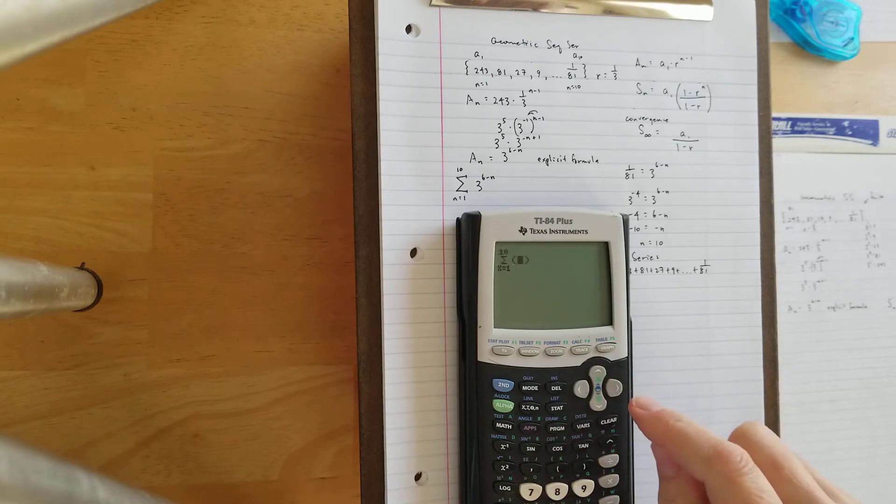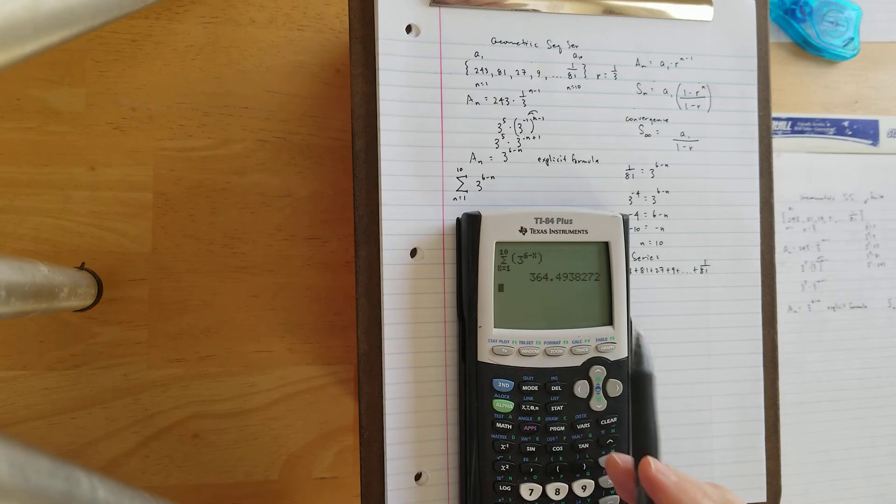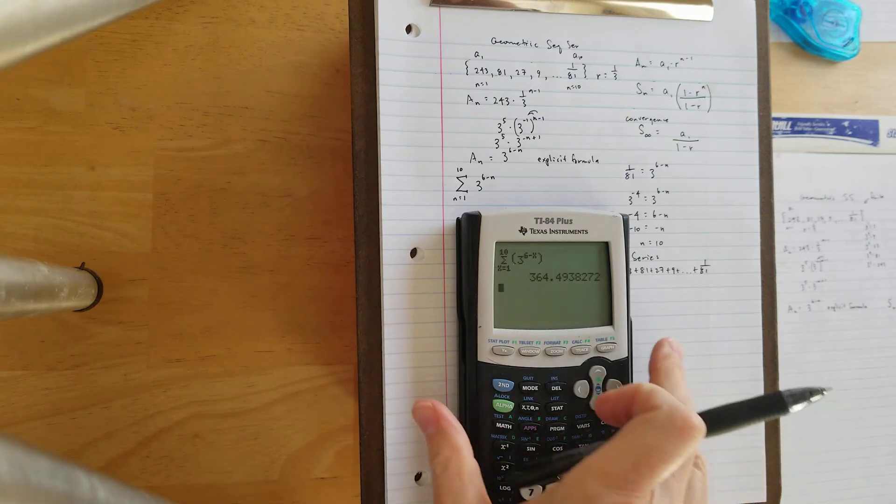And then we're going to plug in our 3 to the power of 6 minus n or x for us. Scroll to the right, and that's going to give us our solution for the sum. 364.5-ish.